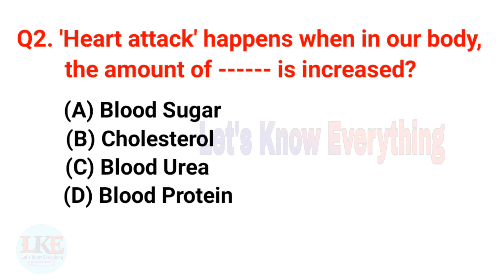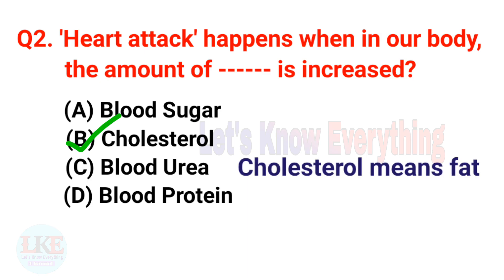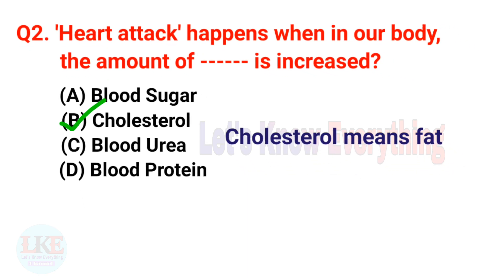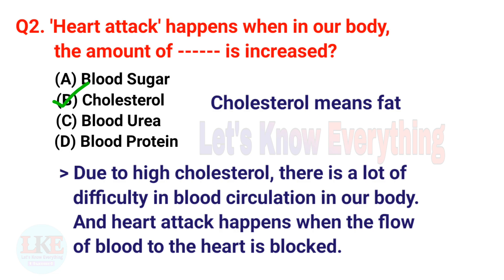Question number two: heart attack happens when the amount of what is increased in our body? The right answer is option B, cholesterol — which means fat. Due to high cholesterol, there is difficulty in blood circulation, and a heart attack happens when the flow of blood to the heart is blocked.